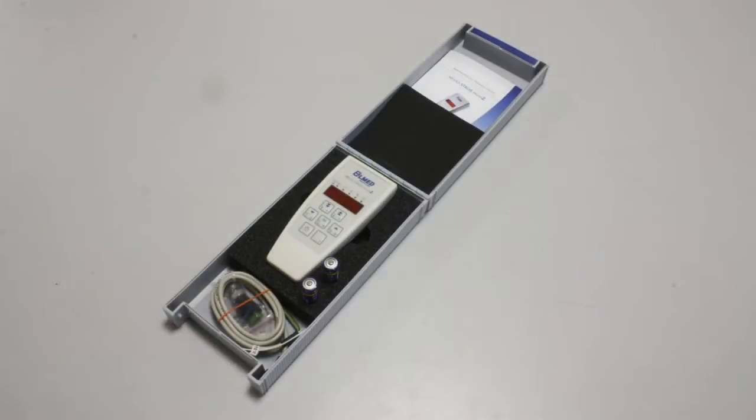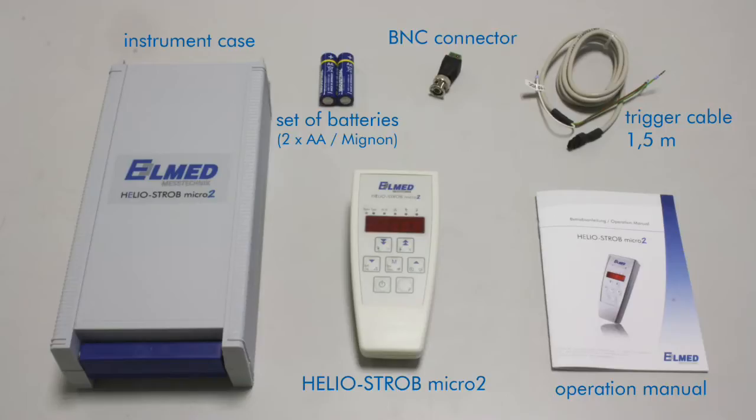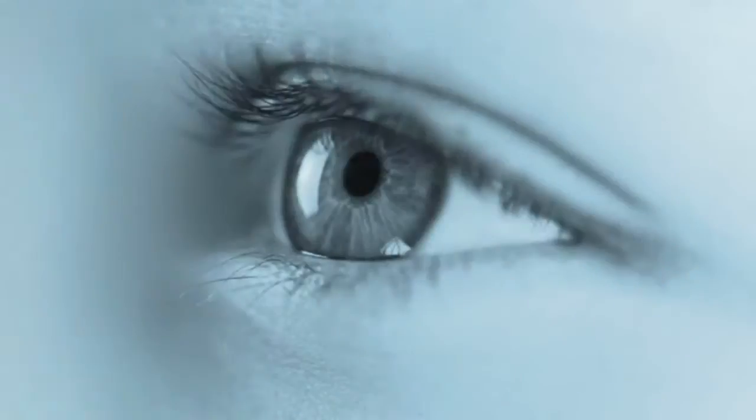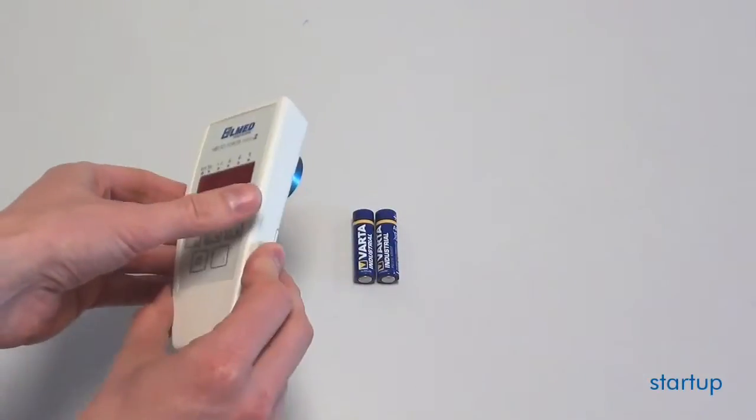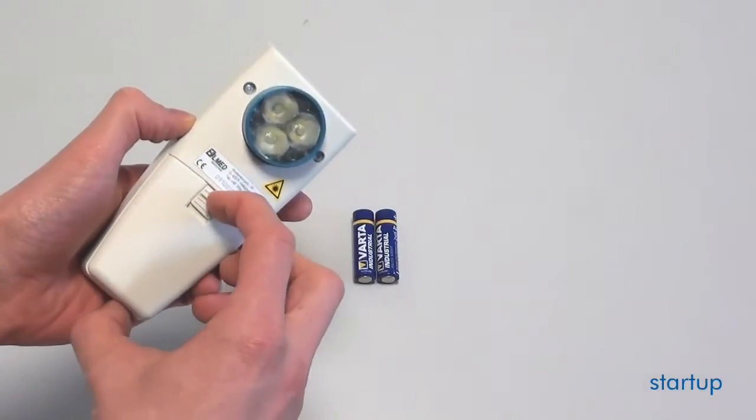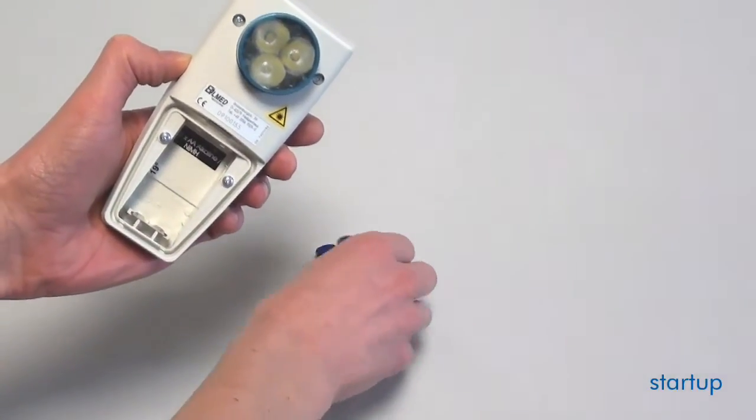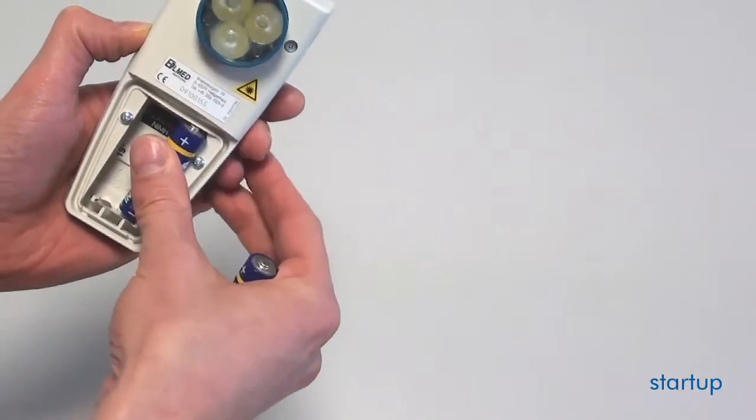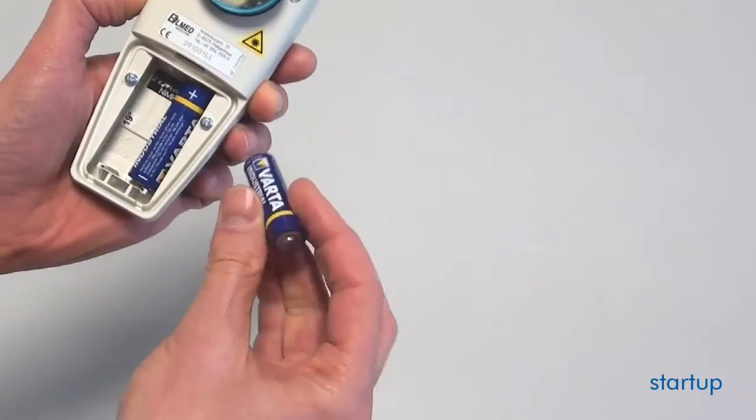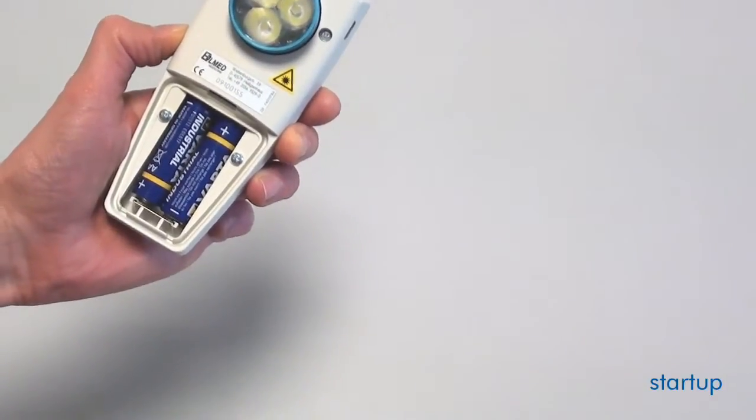The HelioStrobe Micro 2 is easy to use. Everything you need is included in the scope of delivery. For the start-up of the device, please proceed as follows: Open the housing of the rear panel, insert the batteries, and please ensure that the polarity is correct. After closing the battery compartment, the stroboscope is ready for use.